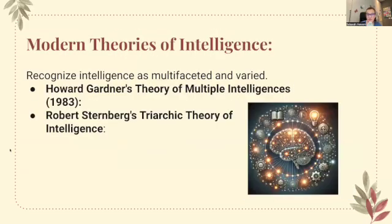Now we're going to look at some modern theories of intelligence. Howard Gardner's theory of multiple intelligences, from 1983, proposes that intelligence is not a single general ability but several specific abilities. Initially he identified seven types of intelligence, such as linguistic, logical-mathematical, and spatial. Each learning situation happens with different types of intelligence — it's actually really interesting work that he did.